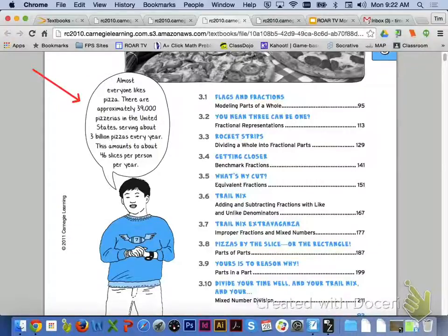One kind of neat thing to take a look at here as we get started, it says that almost everyone likes pizza. There are approximately 39,000 pizzerias in the U.S. serving about 3 billion pizzas every year, and this amounts to about 46 slices per person per year. So hopefully each of you has eaten 46 pieces of pizza over the course of the year. Let's get started with chapter 3 and lesson 3.1.